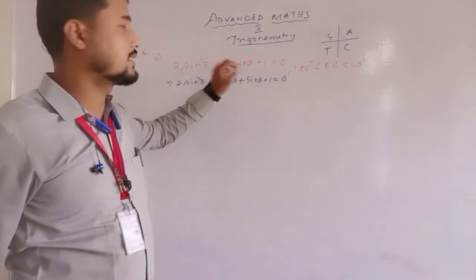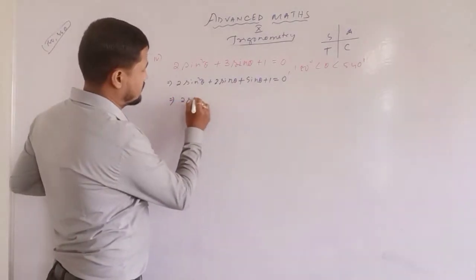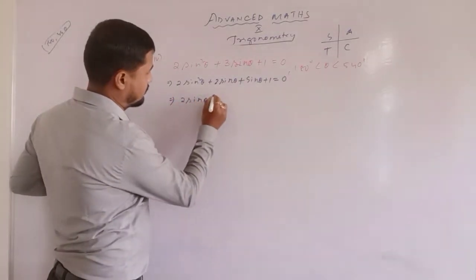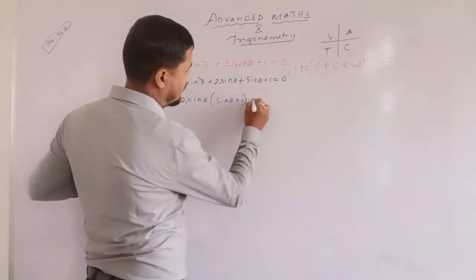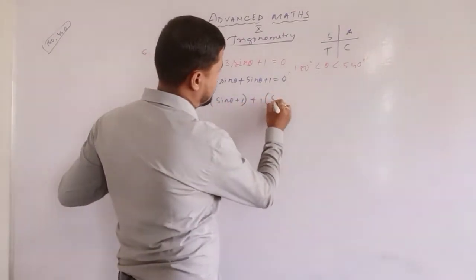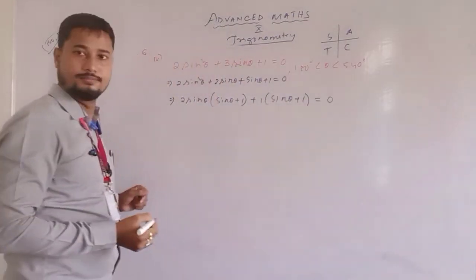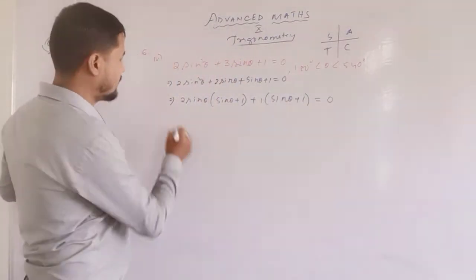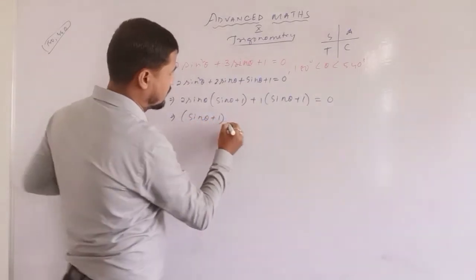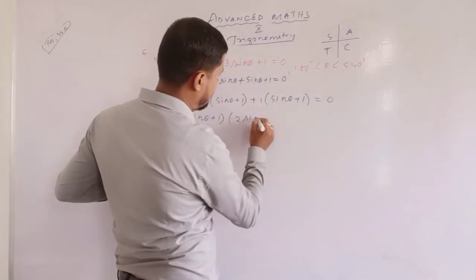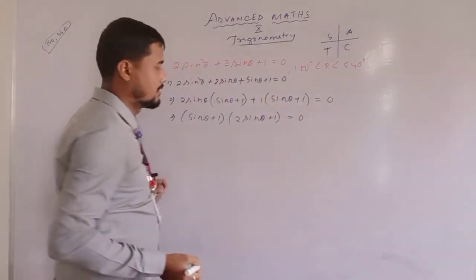2sinθ + sinθ gives 3sinθ. So we get: 2sinθ(sinθ + 1) + 1(sinθ + 1) = 0, which implies (sinθ + 1)(2sinθ + 1) = 0.